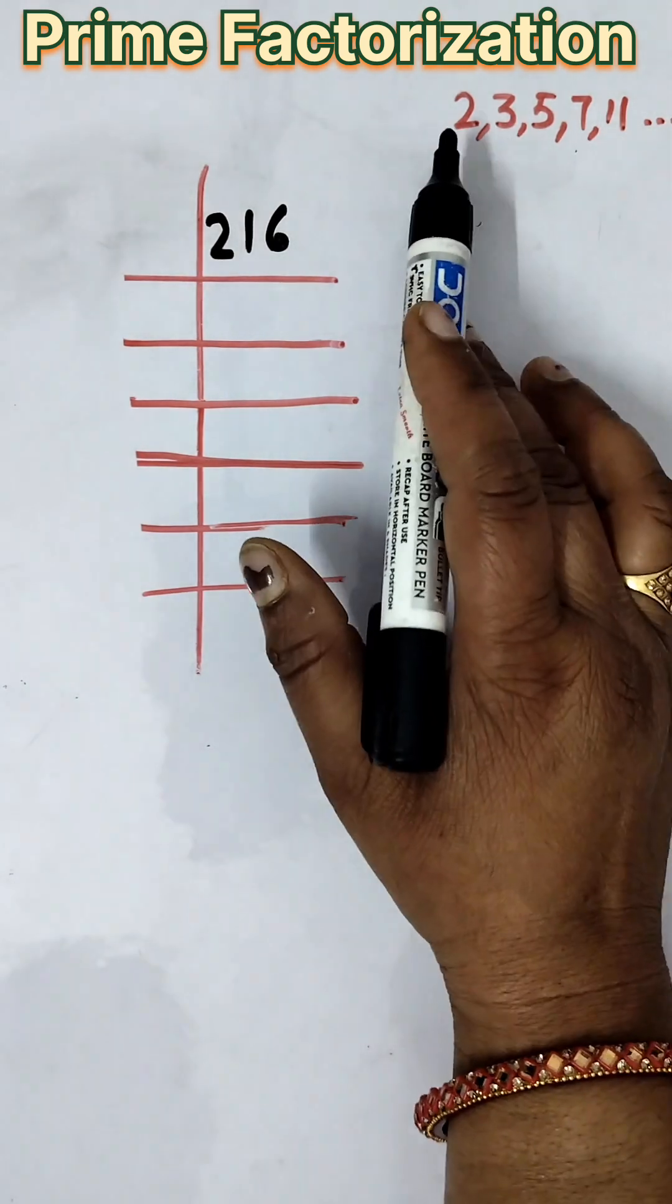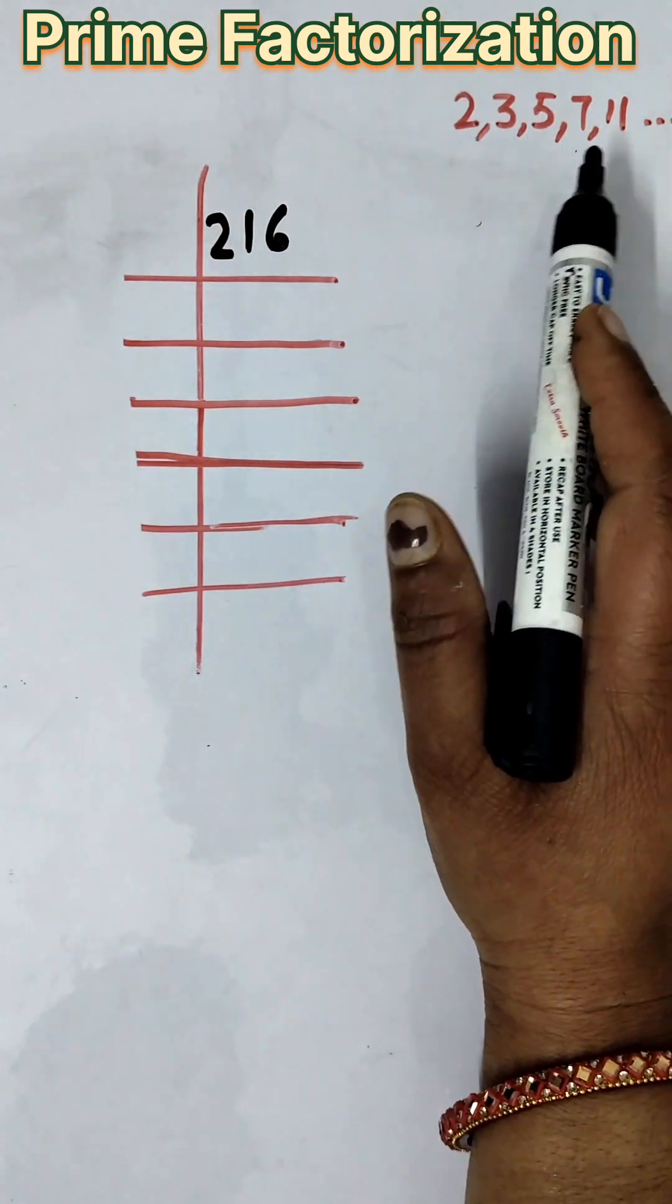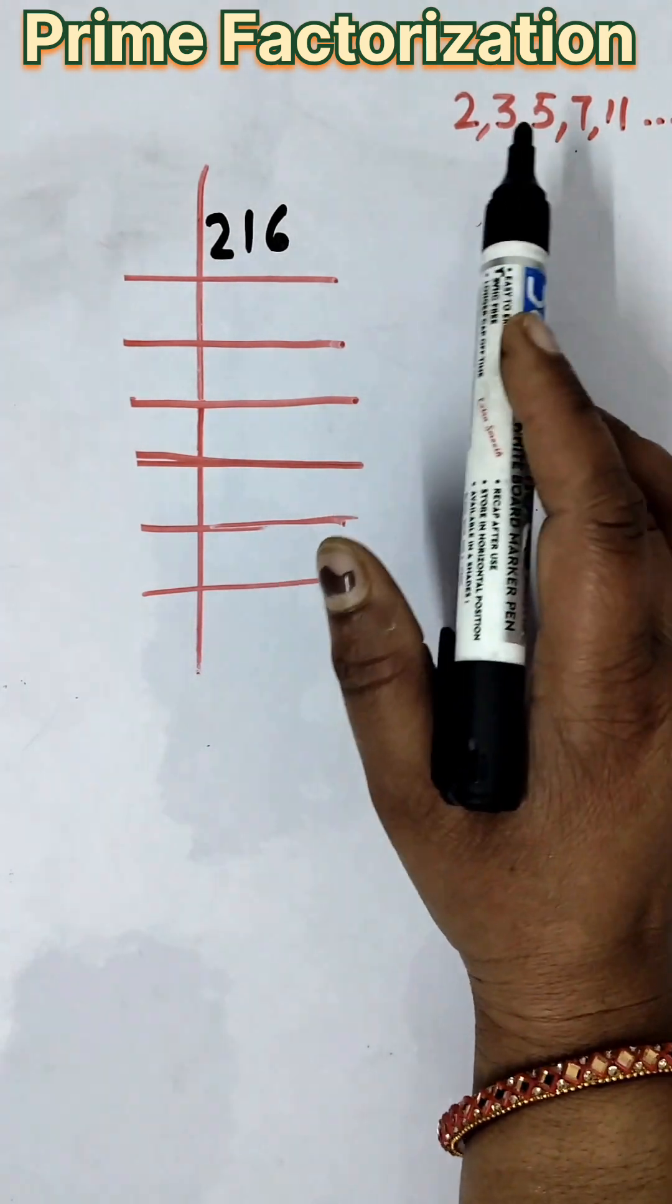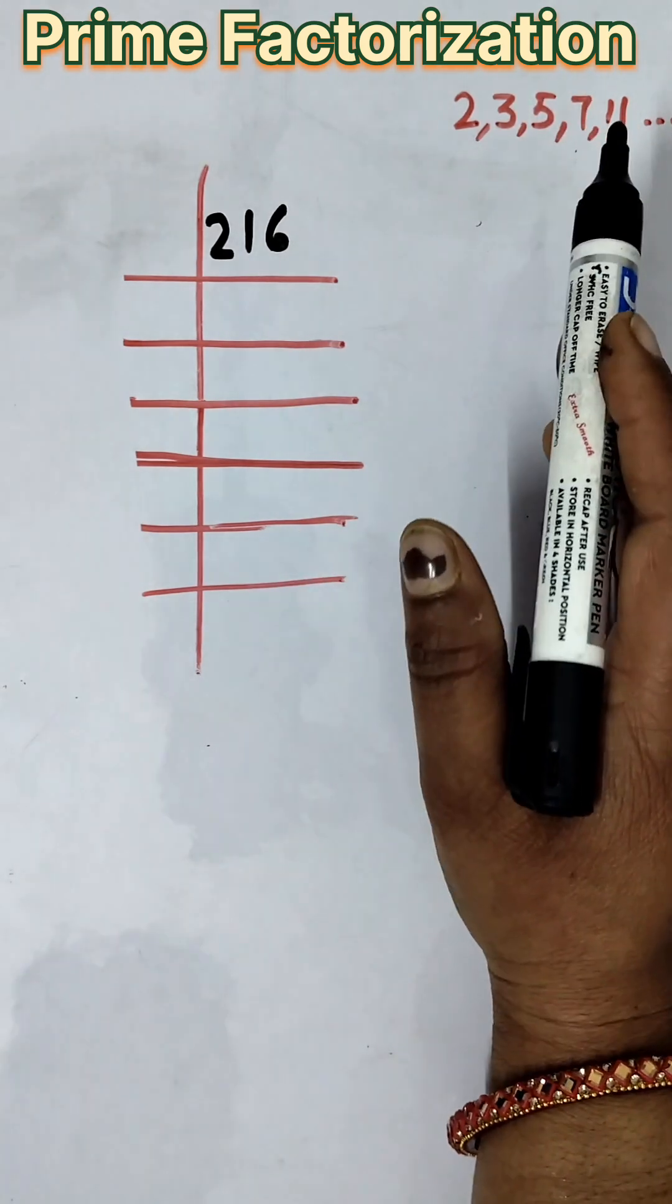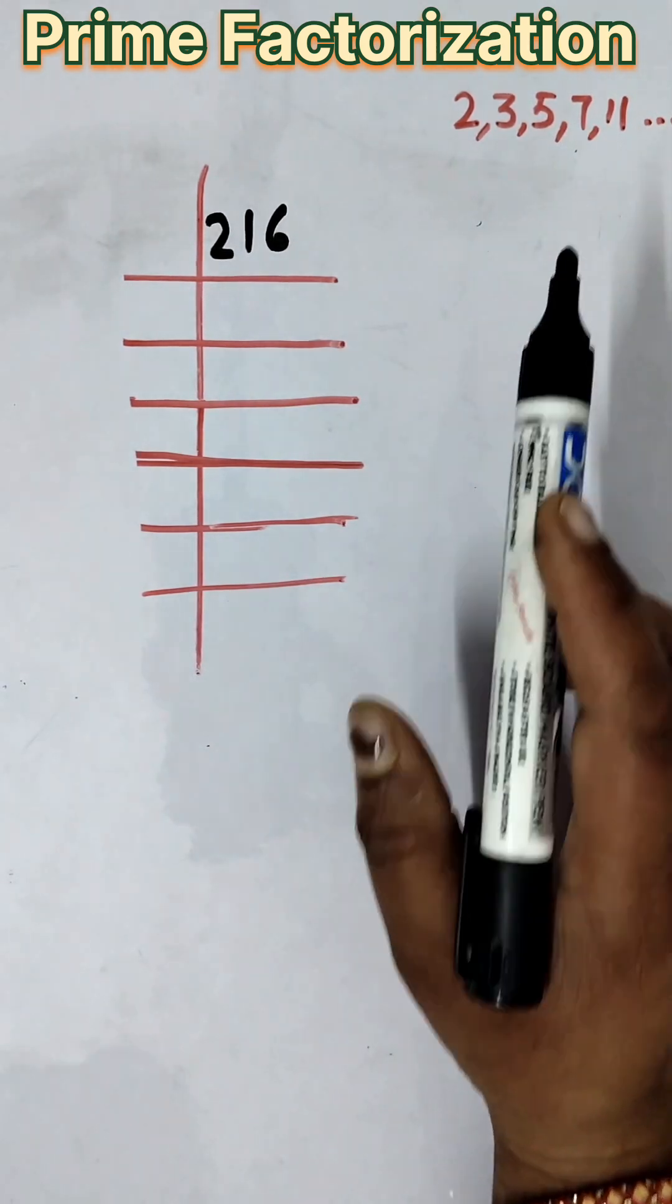The prime numbers are those numbers that are not in any other table. They are divisible by 1 or by itself. So, with these numbers, we will do prime factorization.